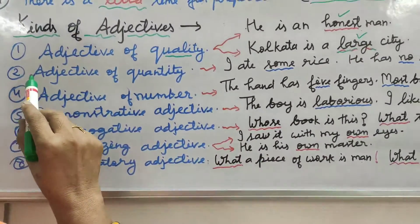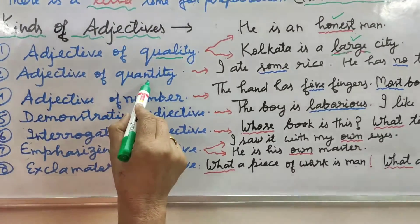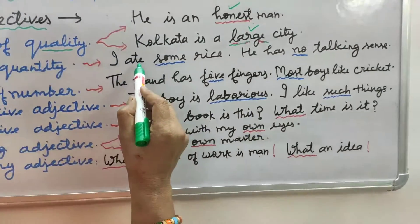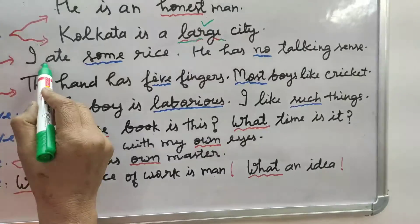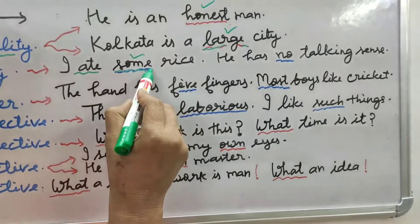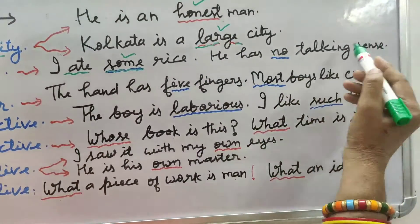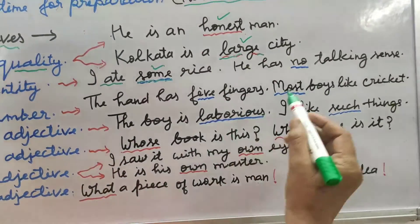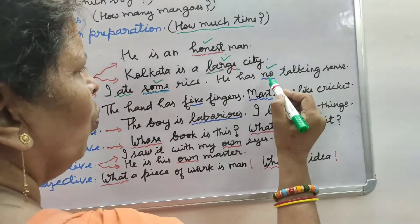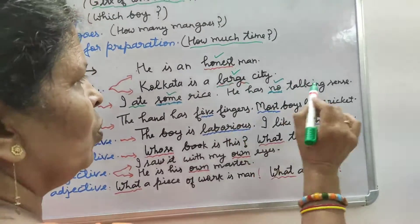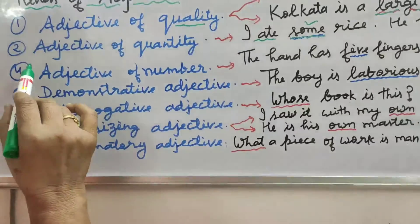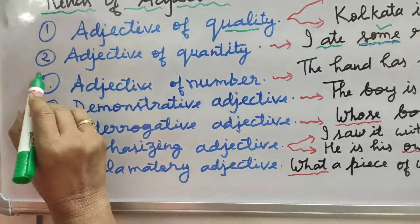Second is adjective of quantity — quality se yogita, quantity means matra. 'I ate some rice.' Maine kitna khaya? Rice thoda sa. So here 'some' is the adjective of quantity. 'He has no talking sense.' How much? No — it means nothing at all. So 'no' is the adjective of quantity.